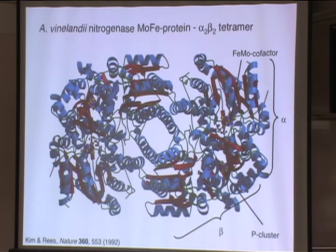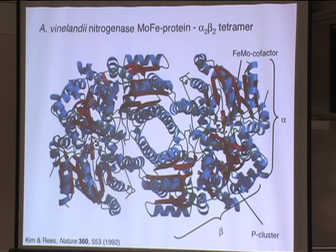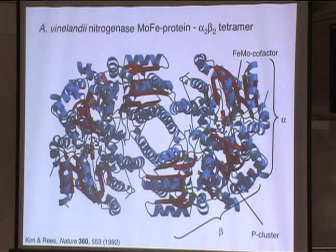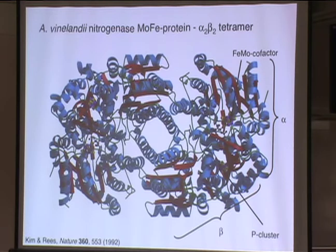My first graduate student at Caltech, Johnson Kim, solved the structure of the molybdenum iron protein for his thesis. The MoFe protein has four subunits — it's a tetramer — two copies of the alpha subunit and two of the beta subunit. We think of it as being composed of two alpha-beta subunit pairs. Associated with each alpha-beta pair are two types of metal centers: the iron-molybdenum cofactor, where nitrogen binds and gets reduced, and the P cluster at the interface between the two subunits.